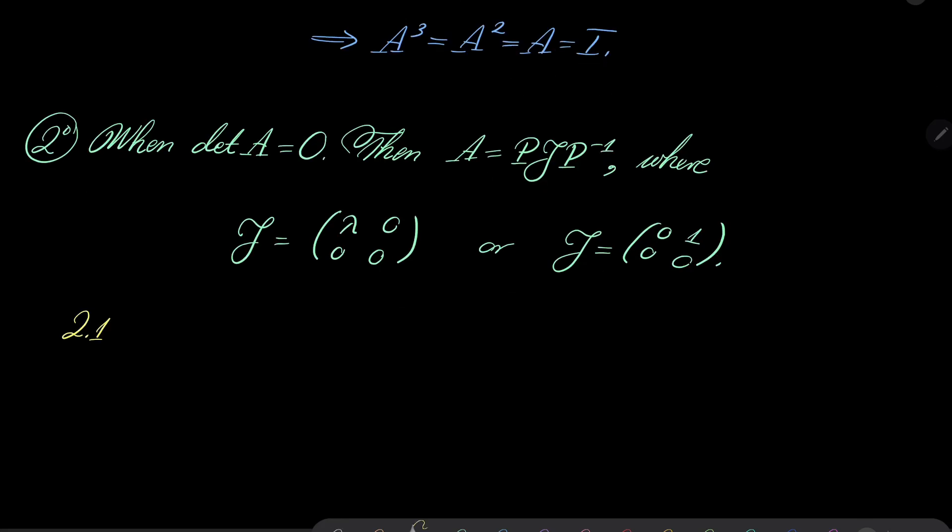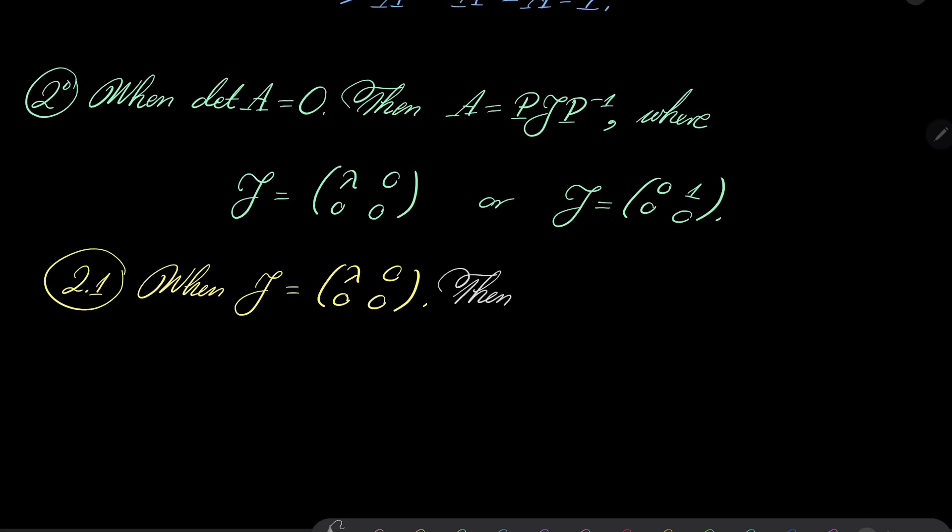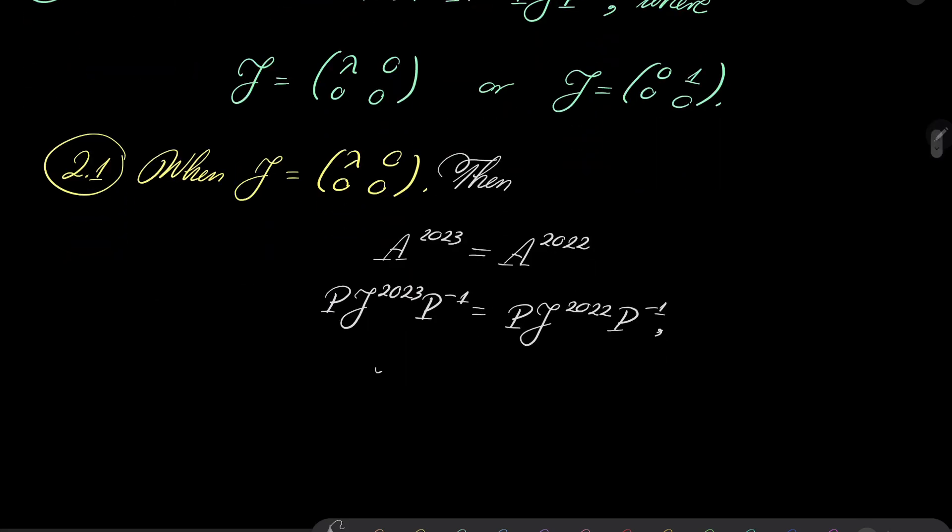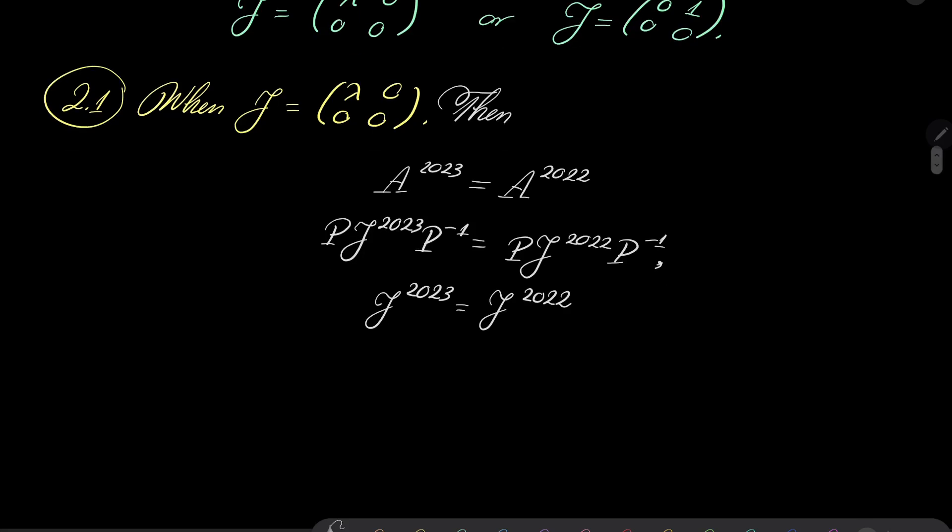So case 2.1 when J equals lambda 0, 0, 0. Notice that then let's take our assumption once again. And notice that this can be written as P J to the power of 2023 P inverse. And this equals P J to the power of 2022 P inverse. Well, this means that J to the power of 2023 equals J to the power of 2022. But what does it mean? It's pretty easy to see that if we take our matrix lambda 0, 0, 0 to these powers, we will just get this.